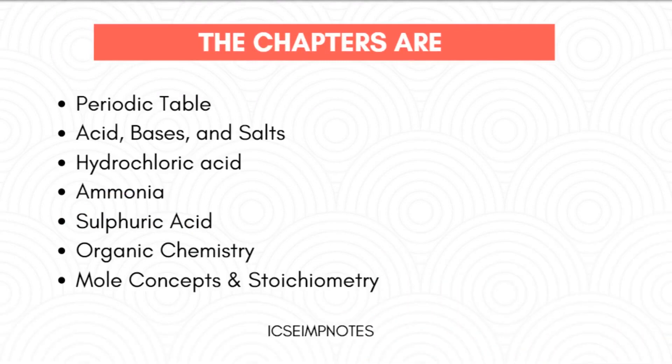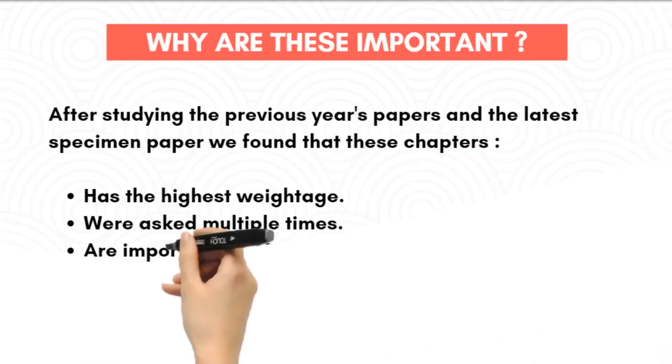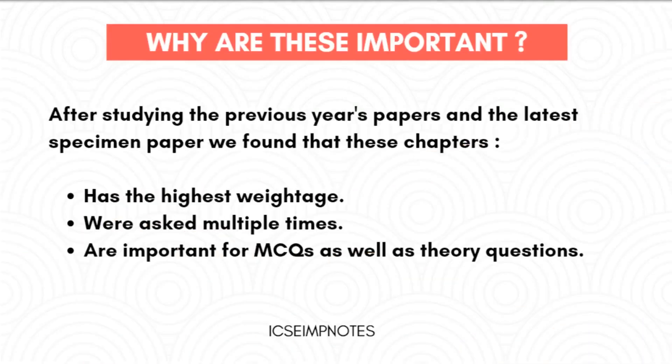The chapters also include hydrochloric acid, ammonia, sulfuric acid, organic chemistry, mole concepts, and stoichiometry. Why are these important? After studying the previous year's papers and the latest specimen paper, we found that these chapters have the highest weightage — they were asked multiple times and are important for MCQs as well as theory questions.